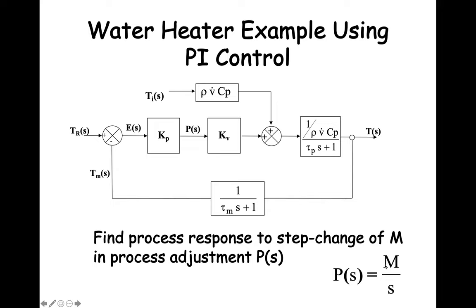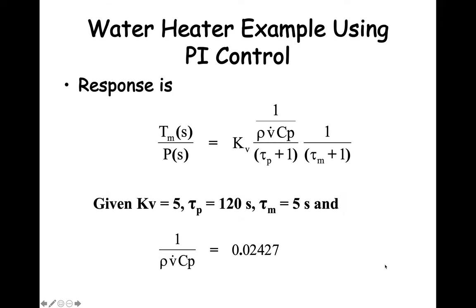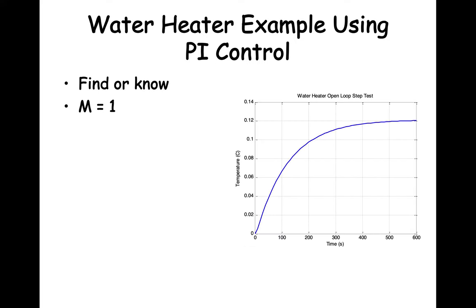Let's see what the controller settings should be for our water heater example. Using our block diagram, we want to see how the outlet water temperature T behaves if the actuator input experiences a step change of magnitude M. The actuator input function is a step change M over S. Here is the transfer function describing the measured output temperature Tm for a given actuator input P. Using the given data shown, we get the response on the next slide. Here is a graph of the water heater output temperature in response to a unit step change in the actuator.